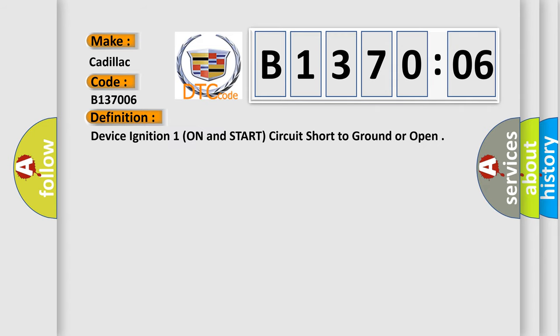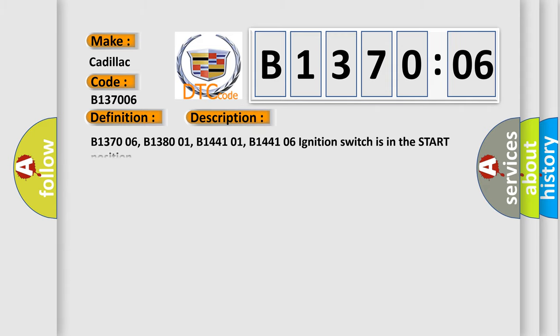The basic definition is: device ignition 1, on and start, circuit short to ground or open. And now this is a short description of this DTC code.